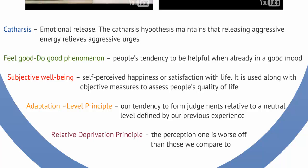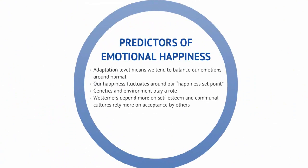Do you see any problems with this or applications for dealing with each other online? Generally, our predictors for emotional happiness suggest we tend to balance our emotions around a normal level. Happiness fluctuates around our happiness set point. Both genetics and environment play a role here, so we can never get away from that nature-nurture discussion in psychology.